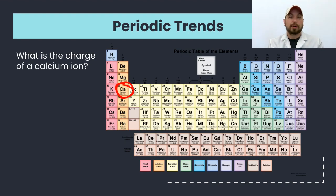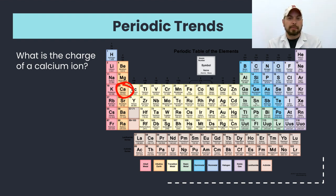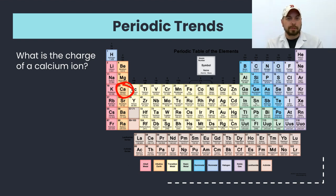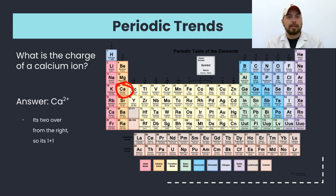Let's do a practice problem. What is the charge on a calcium ion? Take a look at the periodic table — what group is it in? It's in group two; these are the alkaline earth metals. Group two elements are going to lose two electrons to become isoelectric to the noble gases in group eight.